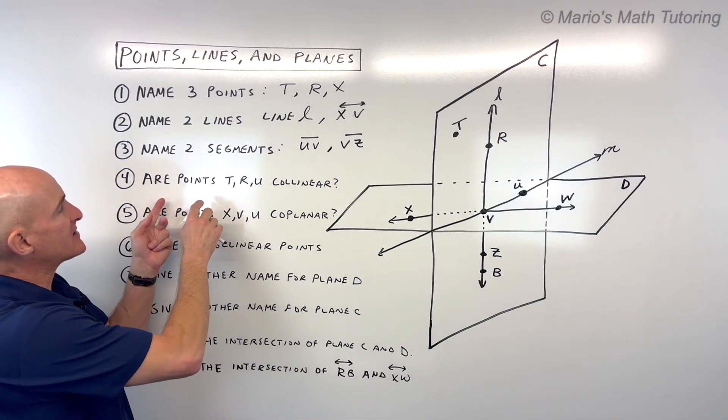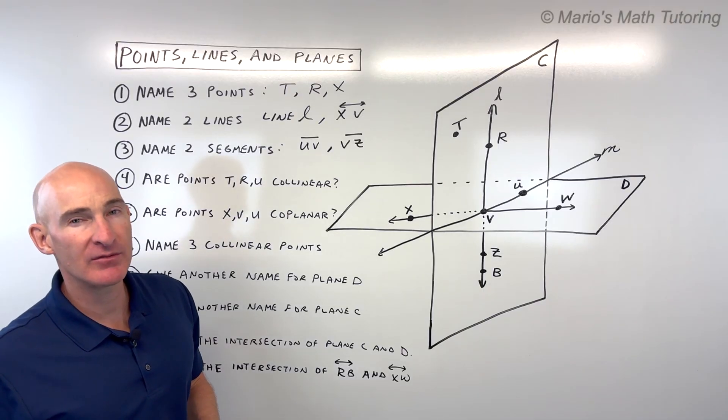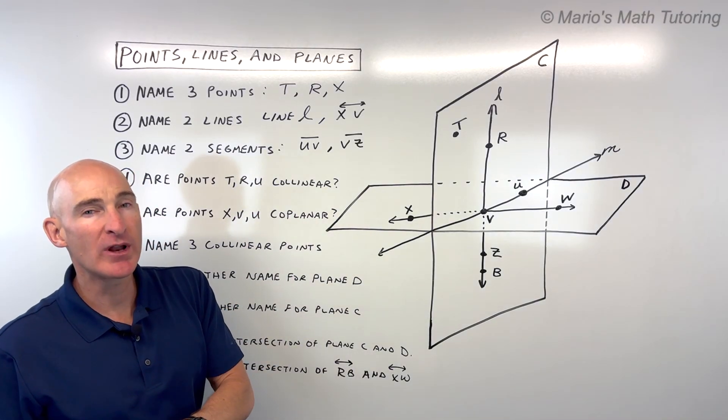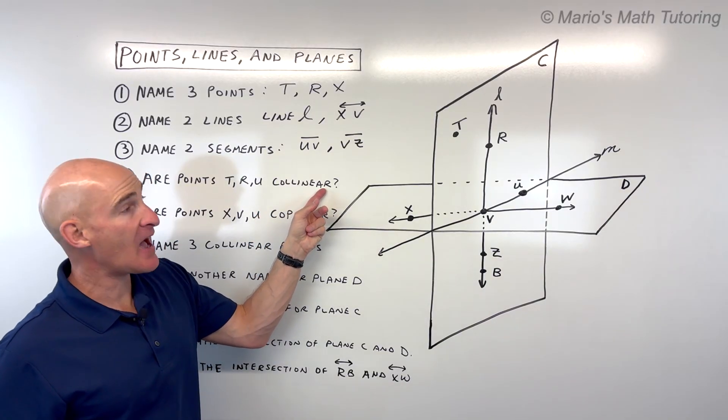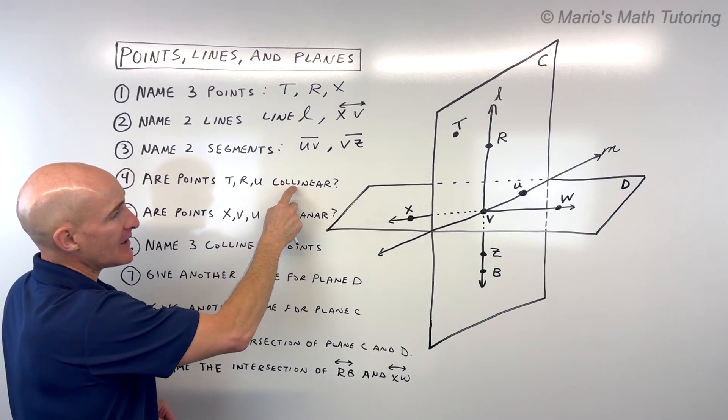Number four says are points T, R, and U collinear? Sometimes when I'm doing these problems, I tell students to look closely at the words. It'll tell you what it means. Co means same, linear means line. So are points T, R, and U on the same line?